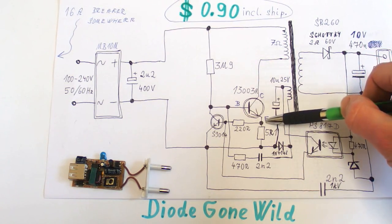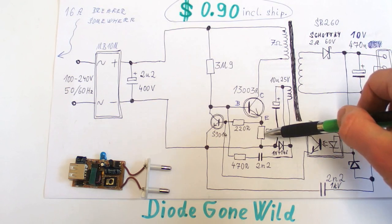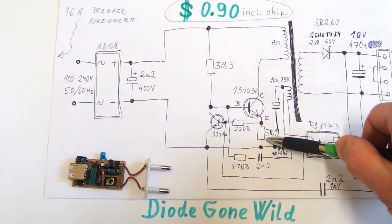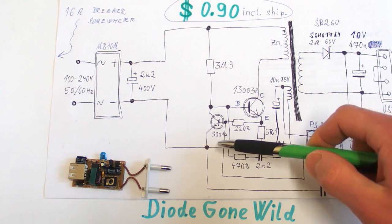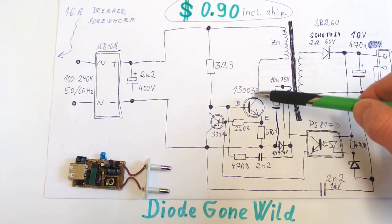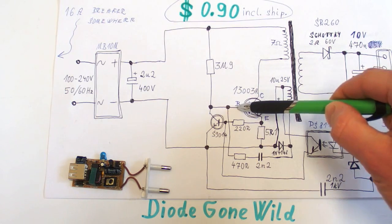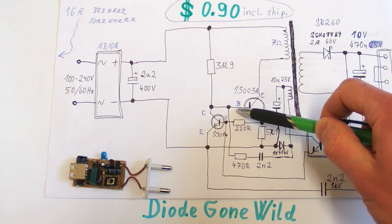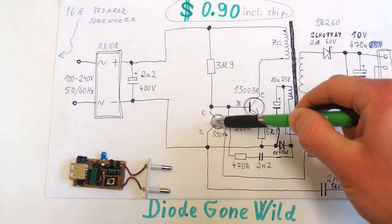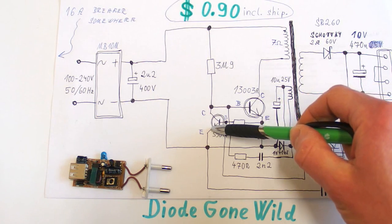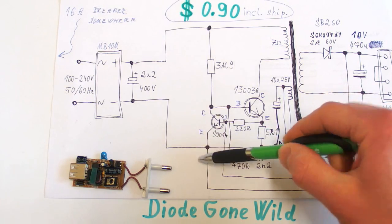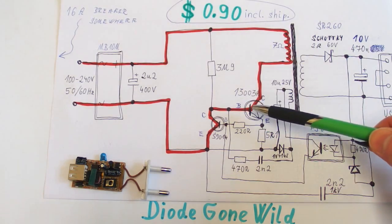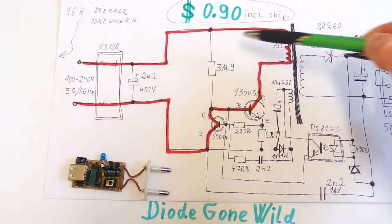It will break down from collector to emitter. And the only thing in series is now the very low resistance resistor, which will probably blow up. But the transistor is likely to break down also from collector to base. So you get the full voltage on the base. And because this is a low voltage transistor, it will also break down immediately. So in the case the transistors will short out, the current path will look like this.